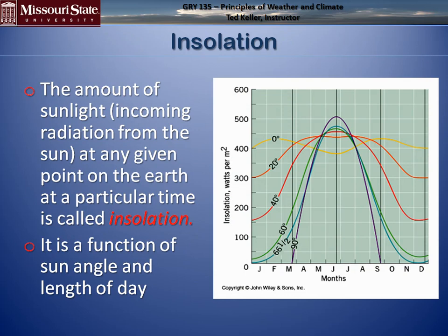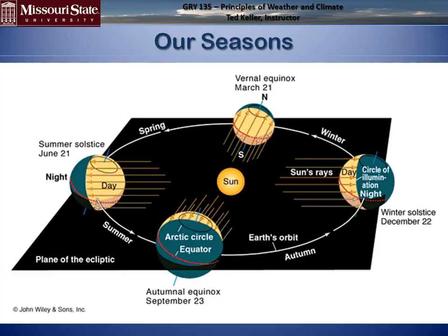Insolation is a function of sun angle and length of day — you add those factors together to get how much energy is available. On this graph, the yellow line represents the equator at 0 degrees — notice that energy is always high and varies very little. The purple line represents the poles at 90 degrees north or south — energy shuts down for half the year and spikes dramatically the other half.